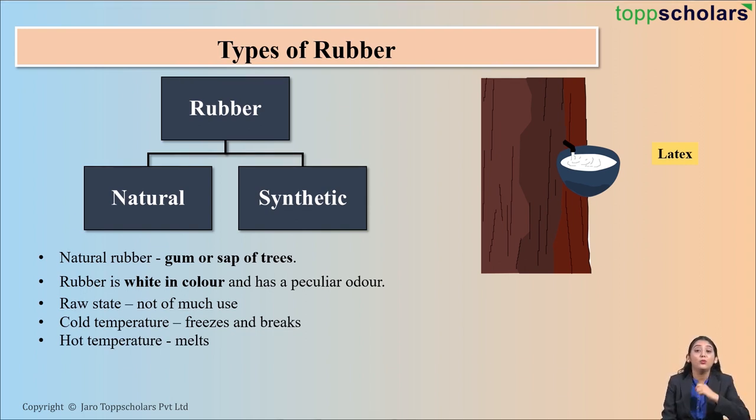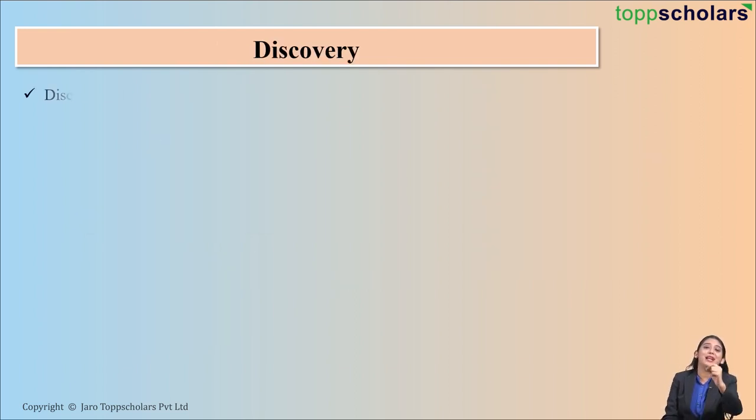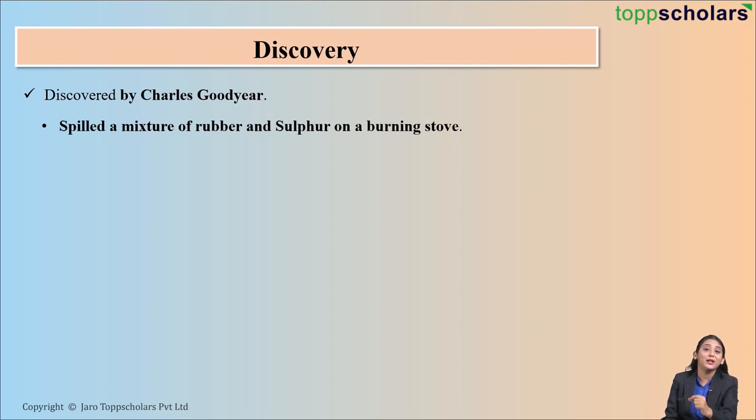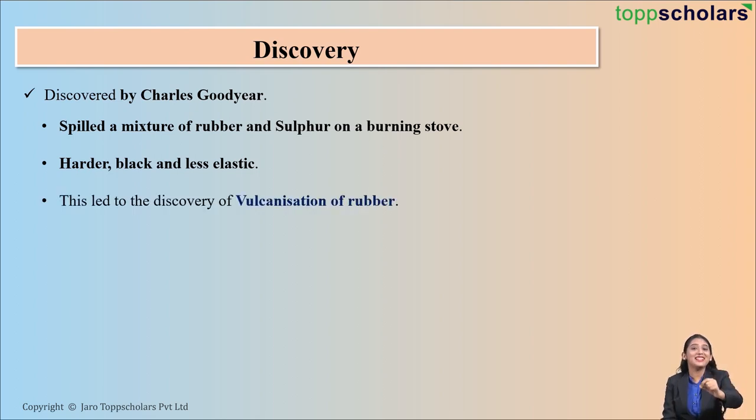This was discovered by an American inventor named Charles Goodyear. Charles Goodyear discovered rubber accidentally when he spilled a mixture of rubber and sulfur on a burning stove. He observed that rubber was converted into a black, much harder, and less elastic substance, and this led to the discovery of vulcanization of rubber.